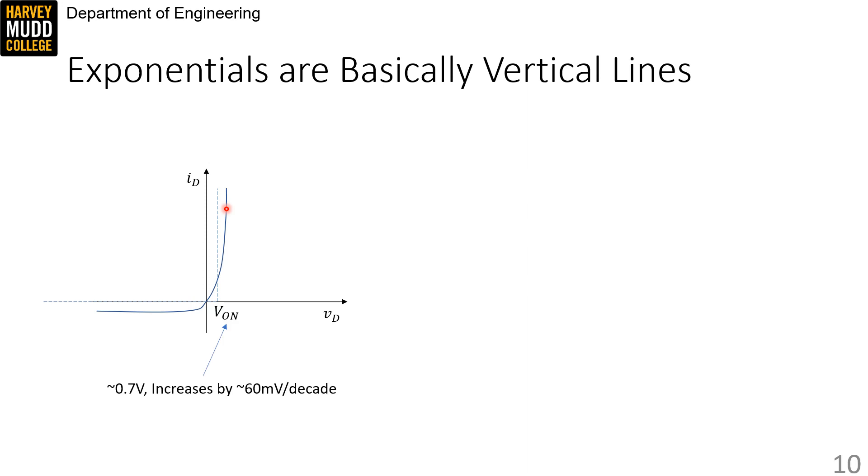Of course, the choice of where to switch from horizontal to vertical is really important for this model. We named this parameter VON, and it's worth noting that VON increases by about 60 millivolts for each decade of change in current.